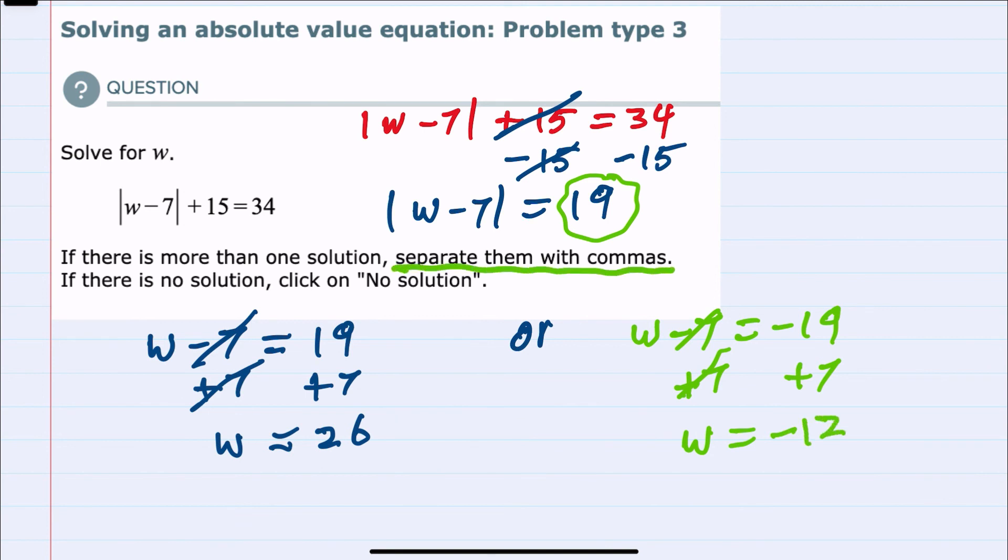So we have two solutions. We would separate by commas. Either W is negative 12 or 26.